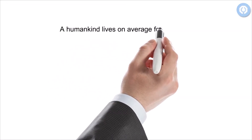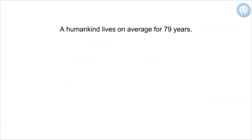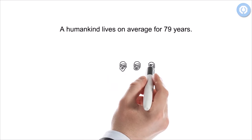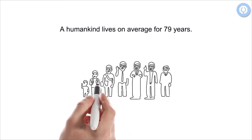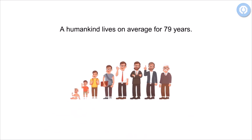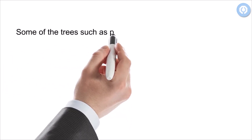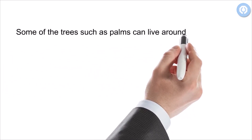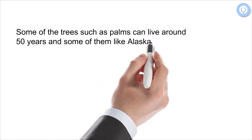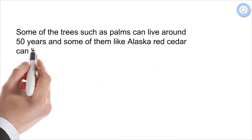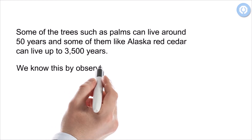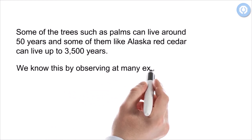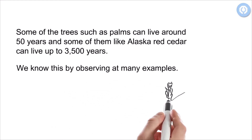Humankind lives on average for 79 years. Some trees such as palms can live around 50 years, and some of them like the Alaska red cedar can live up to 3,500 years. We know this by observing many examples.